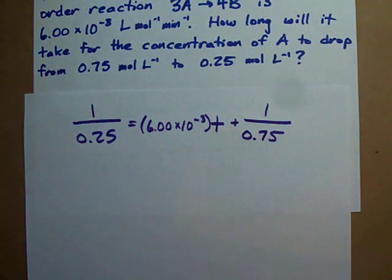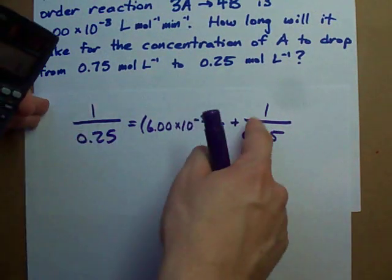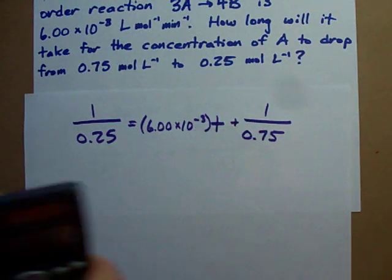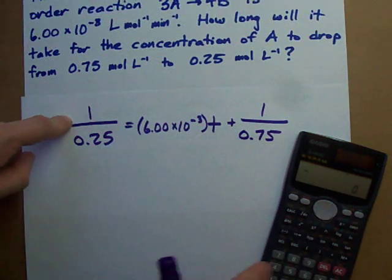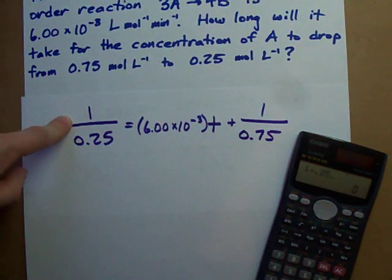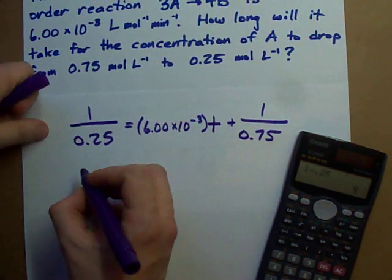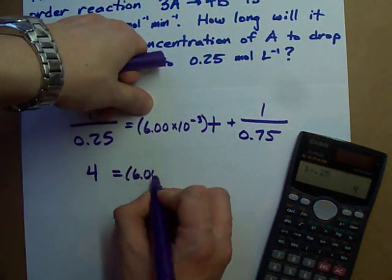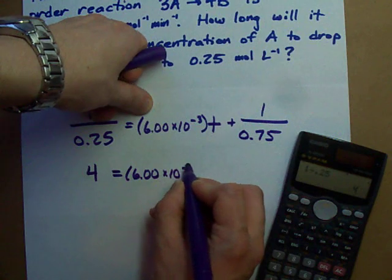Now all I have to do is solve for T. My recommendation is to evaluate each of these fractions separately, then move one to the other side using algebra. Here we go. 1 divided by 0.25 turns out to be 4. I've got to keep this here, 6.00 times 10 to the negative 3.